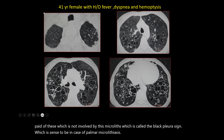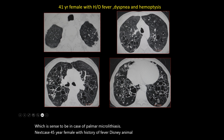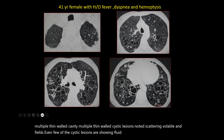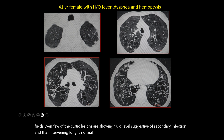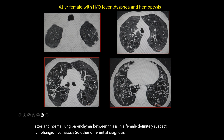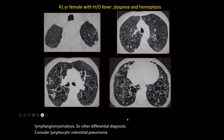Next case: A 41-year-old female with history of fever, dyspnea, and hemoptysis. You can see there are multiple thin-walled cystic lesions scattered in bilateral lung fields. Few of the cystic lesions show fluid levels suggestive of secondary infection, and the intervening lung parenchyma is completely normal. Multiple cysts of nearly equal sizes with normal intervening lung parenchyma in a female strongly suggests lymphangioleiomyomatosis. Other differentials include lymphocytic interstitial pneumonia in females with connective tissue disorders or Sjögren's syndrome.